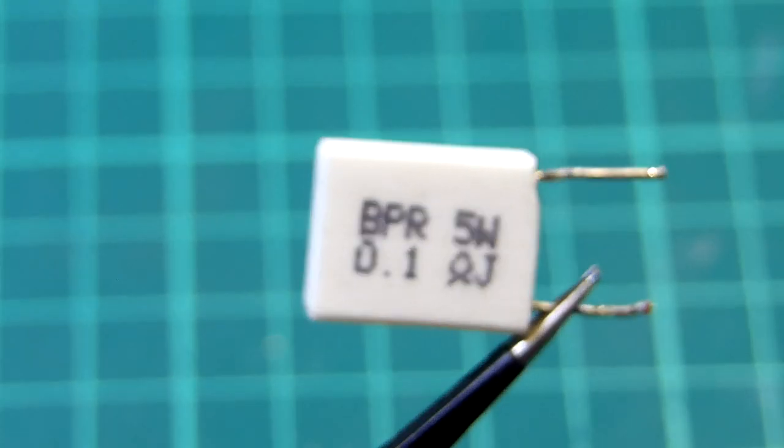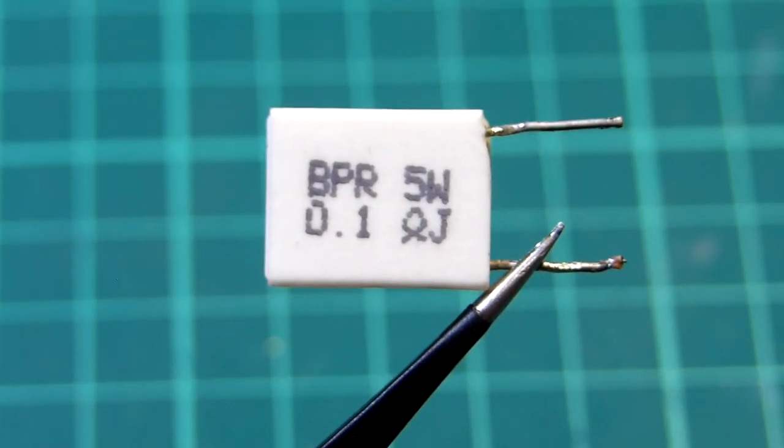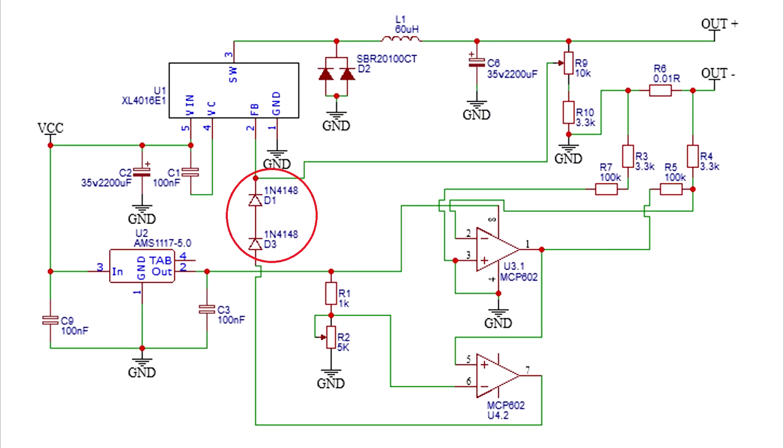For the shunt I chose this one which is around 0.1 ohm. You can use any with at least 2 watts power capability. The two 1N4148 diodes are used in junction with the voltage divider from R9 and R10. Here you can omit one and go with only one if you power the MCP602 from a 3.3V linear regulator.